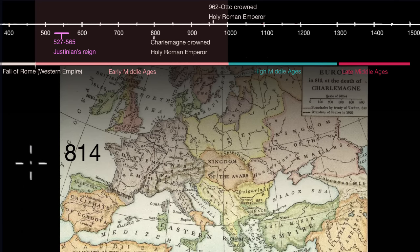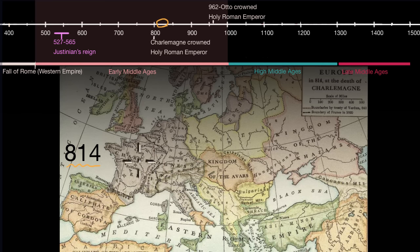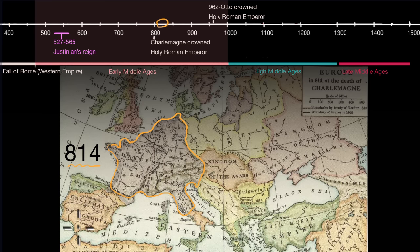Here we have fast-forwarded to the year 814, right around this point on our timeline. A major event has occurred: Charlemagne, King of the Franks, crowned Holy Roman Emperor. On the map you can see Charlemagne's Empire — he has conquered Northern Italy, much of what we consider modern-day France, much of what we consider modern-day Germany, Switzerland, the Netherlands, and Belgium. Charlemagne is really one of the defining figures of the Middle Ages and especially the Early Middle Ages. He is able to unify much of Western Europe, and a lot of our ideas about kings, castles, and knights begin to emerge around the time of Charlemagne.